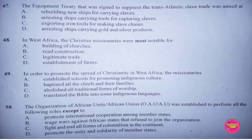Question 47. The equipment treaty that was signed to suppress the transatlantic slave trade was aimed at: A. Rebuilding new ships for carrying slaves, B. Arresting ships carrying tools for capturing slaves, C. Exporting iron tools for making slave chains, D. Arresting ships carrying gold and silver products. The correct answer to this question is B. Arresting ships carrying tools for capturing slaves.